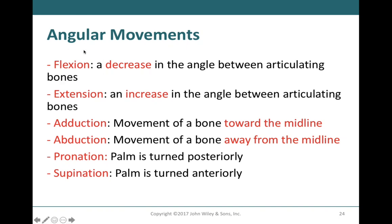Flexion refers to any decrease in the angle between articulating bones — a very common type of angular movement, seen at most joints in our bodies. Extension is the opposite movement, referring to the increase in the angle between those articulating bones.